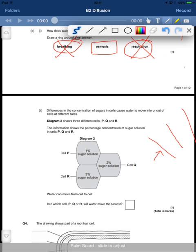So 1% sugar solution, and it's not water solution, it's sugar solution, is the most diluted. And then this one is the most concentrated.